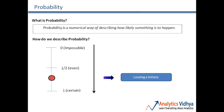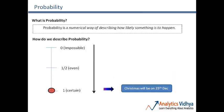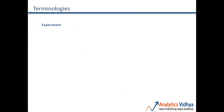Losing a lottery is not certain, but it's more likely than not, so it sits between half and one. Lastly, coming to a certain event: Christmas will be on the 25th of December. This is a certain event — it will always happen — and hence the probability is 1.